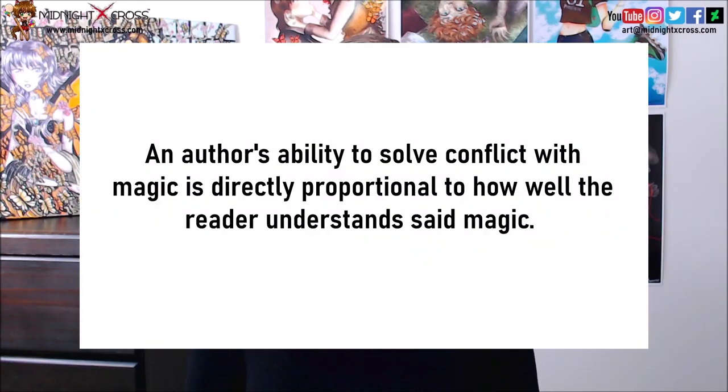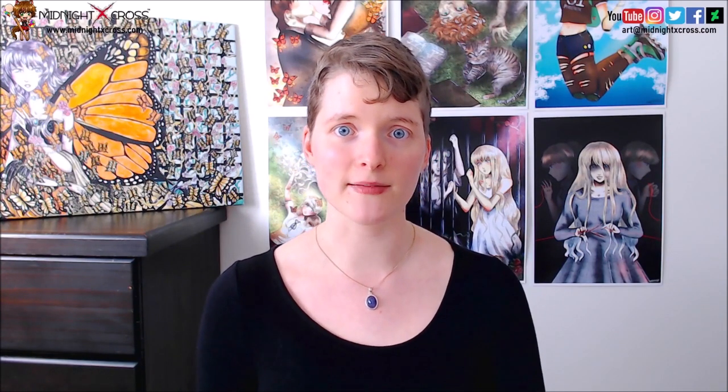The first law is: an author's ability to solve conflict with magic is directly proportional to how well the reader understands said magic. Basically, when a character in your book is solving a problem with magic, you need to ensure that you have explained that magic or powerful ability before showing it. Otherwise, your audience might be left saying, how did that character do that? What is the purpose of this power? By explaining the powers beforehand, you ensure readers understand the power well enough to make sense in your story.